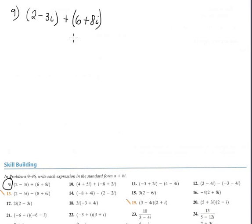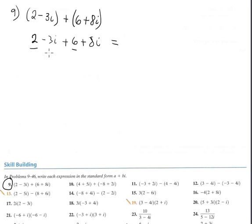Number 9: addition of complex numbers. If you want, remove the parentheses: (2 - 3i) plus (6 + 8i). You combine like terms — real part with real part: 2 plus 6 is 8. And imaginary part with imaginary part. In this case the difference in signs means subtraction, giving 5i. Super easy — addition and subtraction.